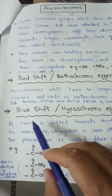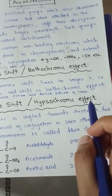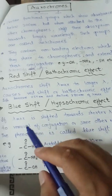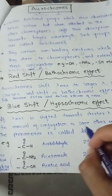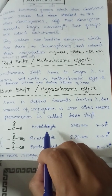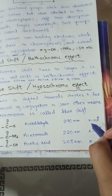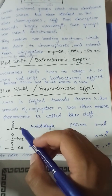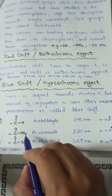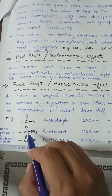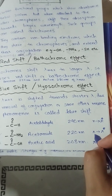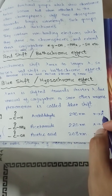The opposite of bathochromic effect is blue shift or hypsochromic effect. If lambda max is shifted towards a shorter wavelength due to removal of conjugation or other reasons, the phenomenon is called hypsochromic effect or blue shift. For example, acetaldehyde has lambda max at 290 nm with n to pi star transition. In acetamide, if this hydrogen is replaced with an amino group having a lone pair of electrons, it causes resonance and electronic induction, shifting the wavelength from 292 nm to 220 nm — a blue shift — because the transition changes from n to pi star to pi to pi star.